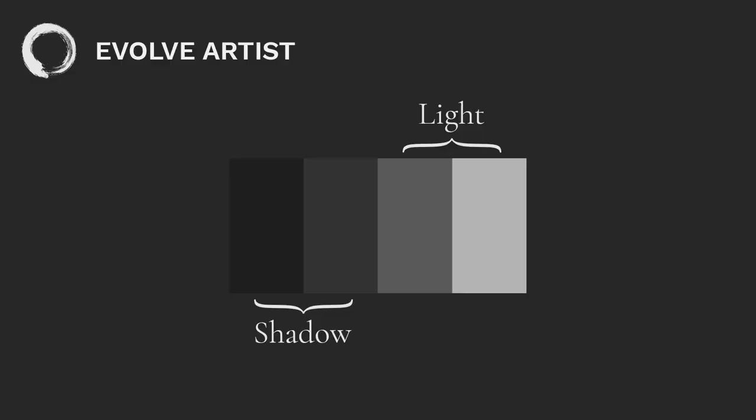So how do you create form using edges? Before thinking about your edges, you first need to get your values right based on light and shadow. Now, in the same way that values have an infinite range between light and dark, edges have an infinite range between razor sharpness and butter-smooth gradients. But for the purpose of learning, you only need two edges: sharp and soft.